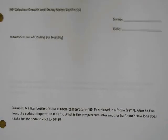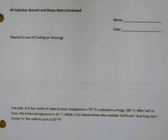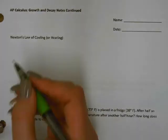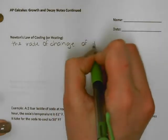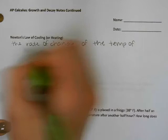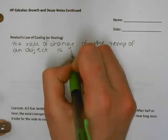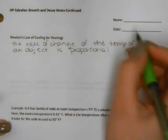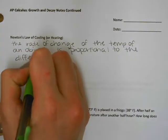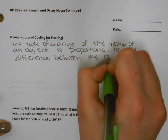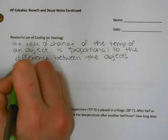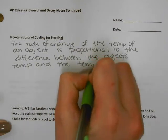For these notes we're going to continue on with exponential growth and decay models and here we're going to look at Newton's Law of Cooling or Heating, depending on the temperature of the environment versus the temperature of whatever object you have. The rate of change of the temperature of an object is proportional to the difference between the object's temperature and the temperature of its surroundings.